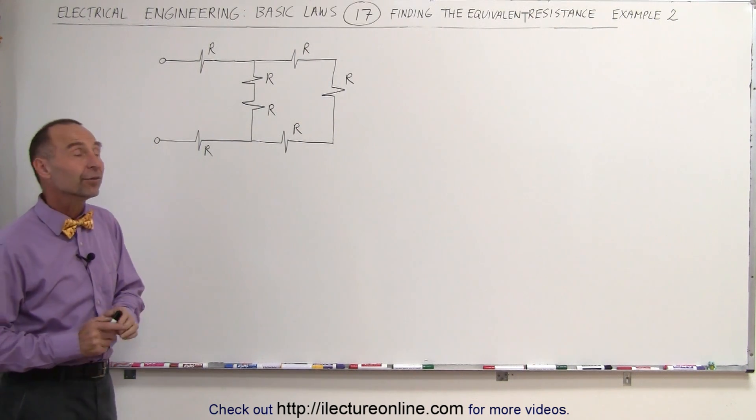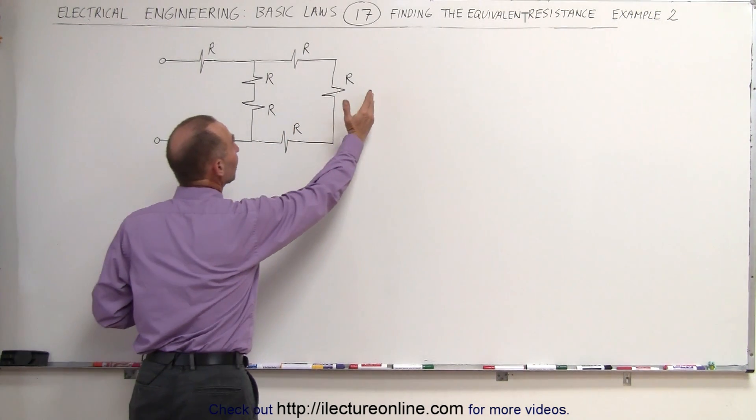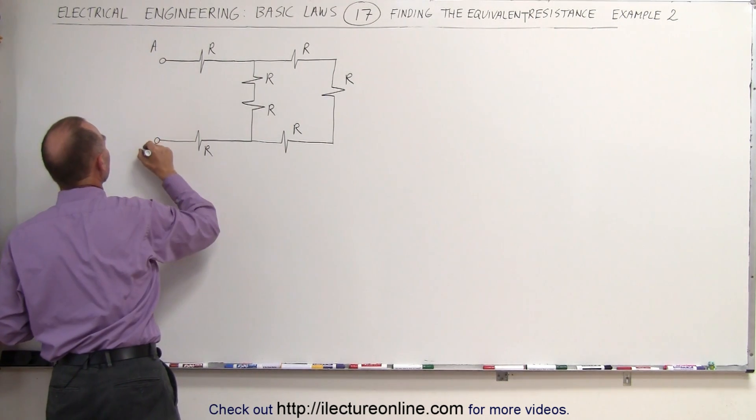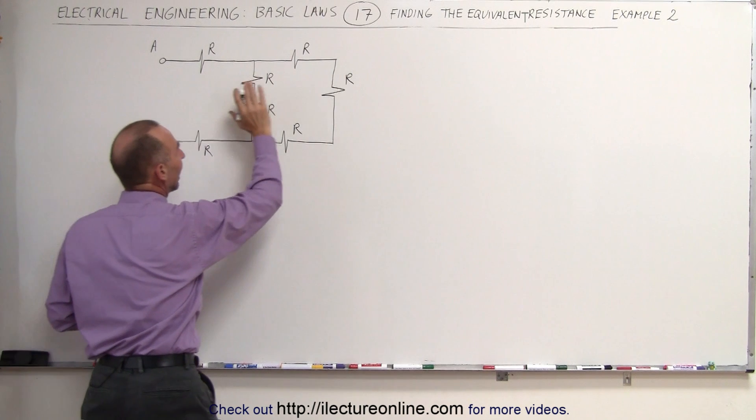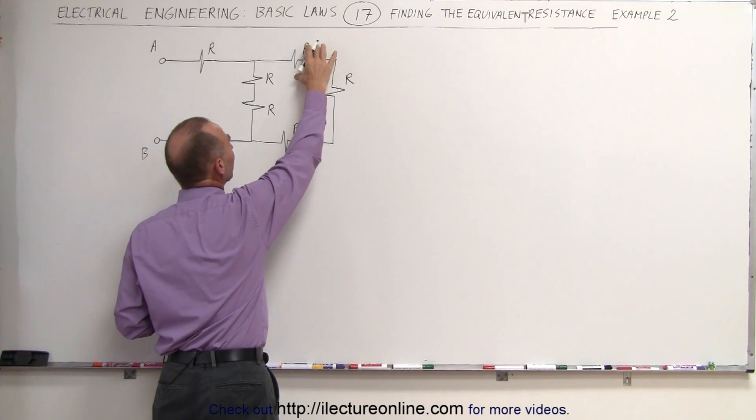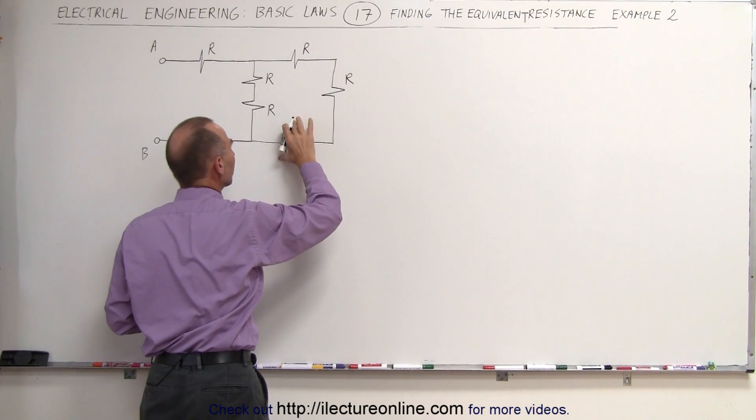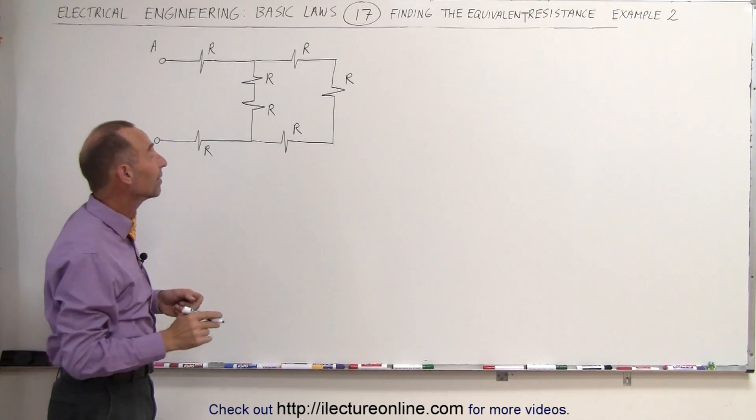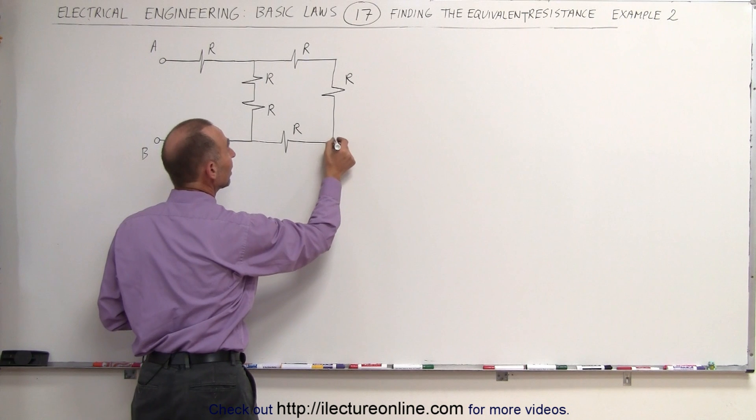What we want to do here is start on the very far end of the circuit. So here's the terminals A and B, typically connected to some source. And starting at the very end, notice that this resistor, this resistor, and this resistor are all in series.